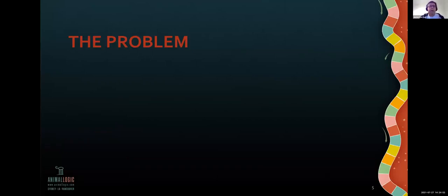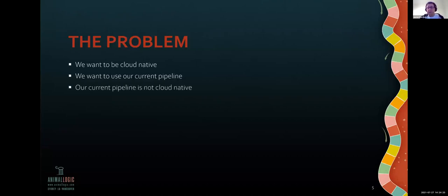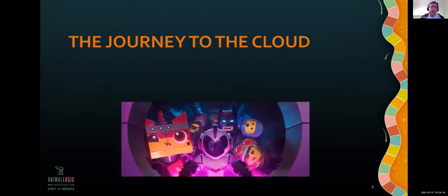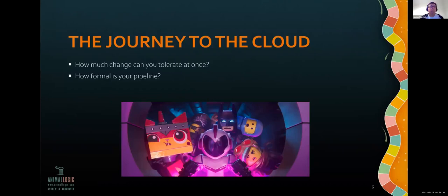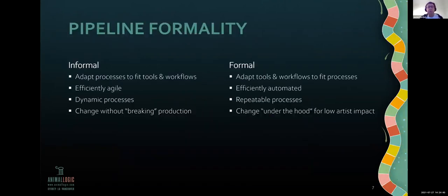The problem I want to talk about today — starting from first principles — we want to be cloud native. And we'd like to use our current pipeline. At Animal Logic we like our pipeline as it is, but our current pipeline is not cloud native. So what are we going to do about that? Your journey to the cloud will no doubt begin with questions, and one of the most important is: how much change can we all tolerate at once? Answering that depends on how formal your pipeline is. If you have a fairly informal pipeline, you're probably adapting your processes around your tools and workflows.